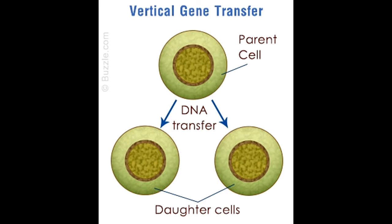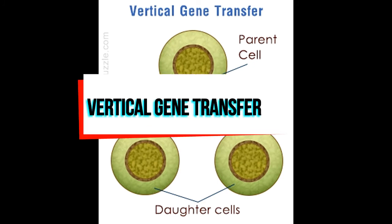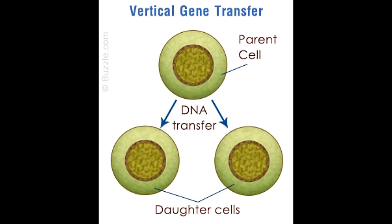Vertical gene transfer occurs through division of cells by mitosis and meiosis. As an example in humans, horizontal gene transfer of viral DNA by human papillomavirus (HPV) causes cervical cancer in human hosts.